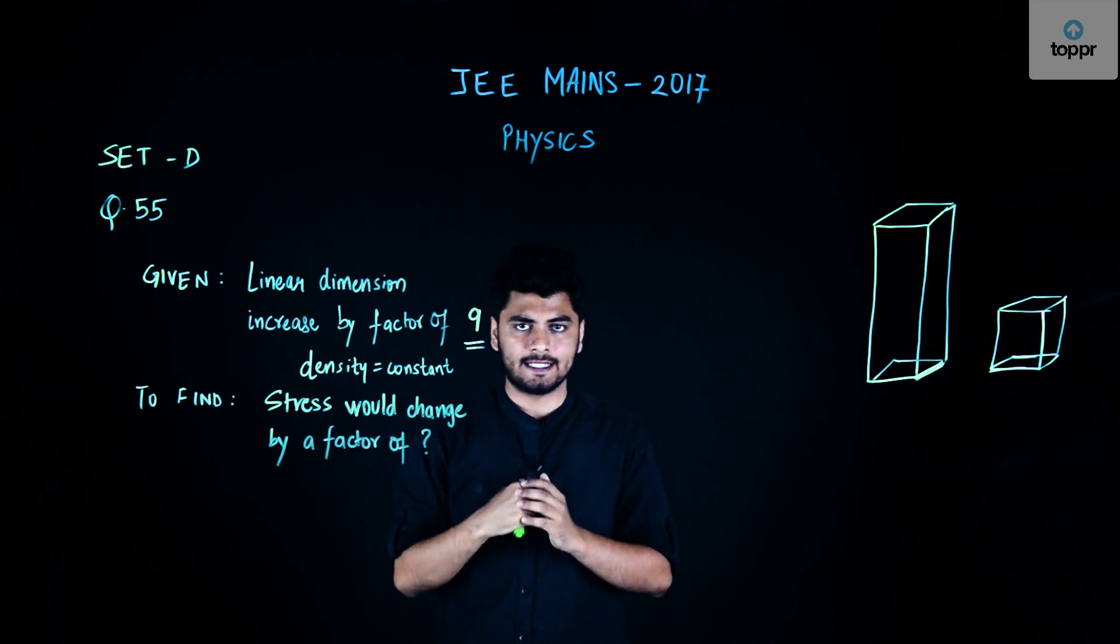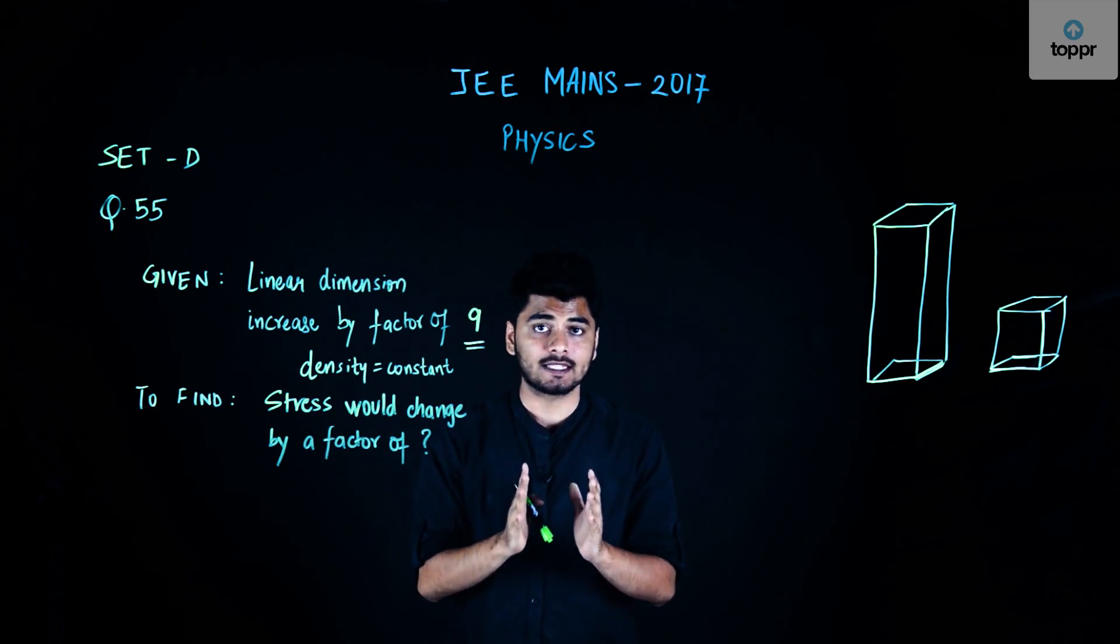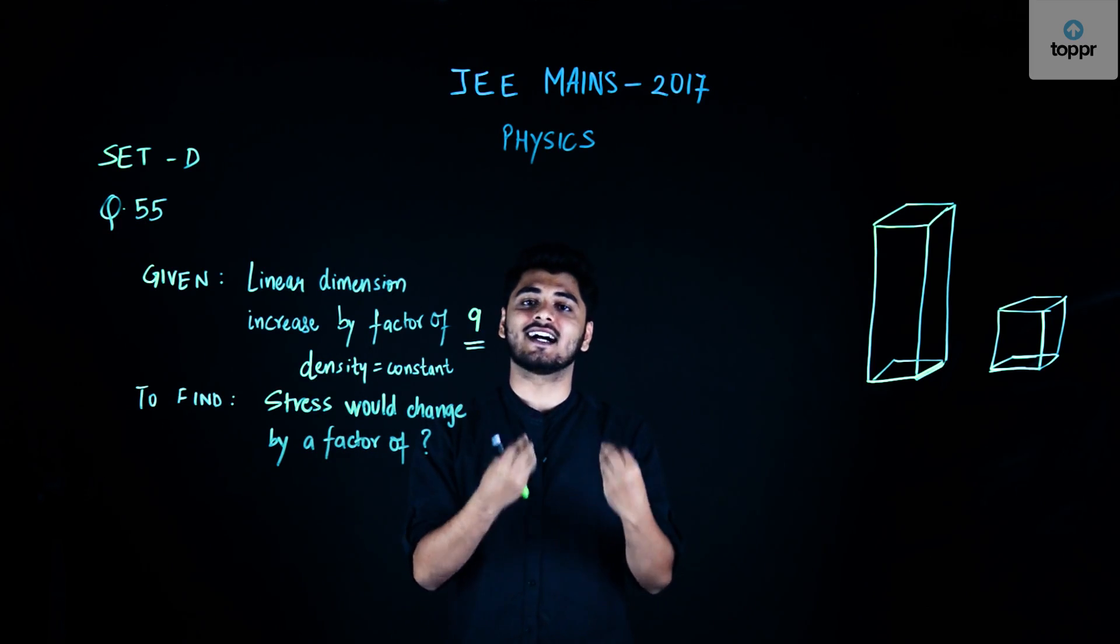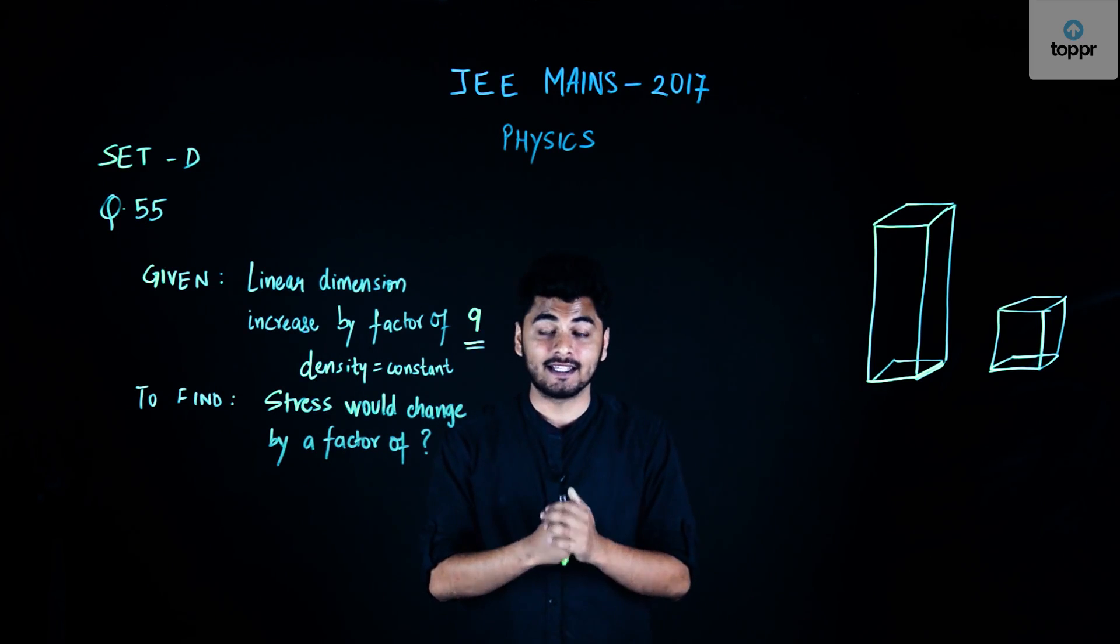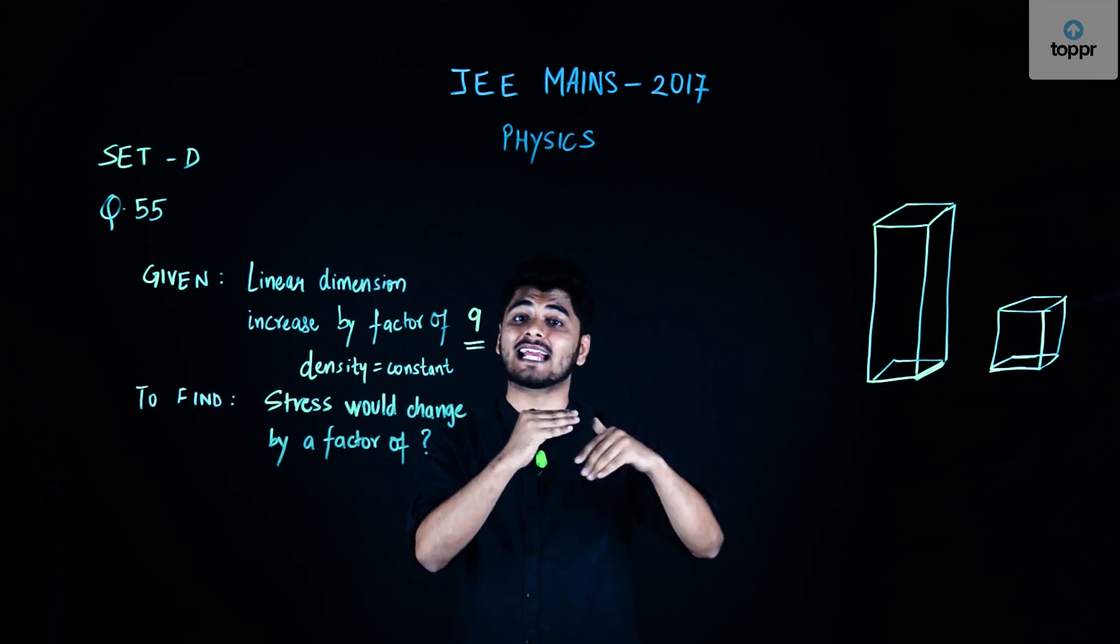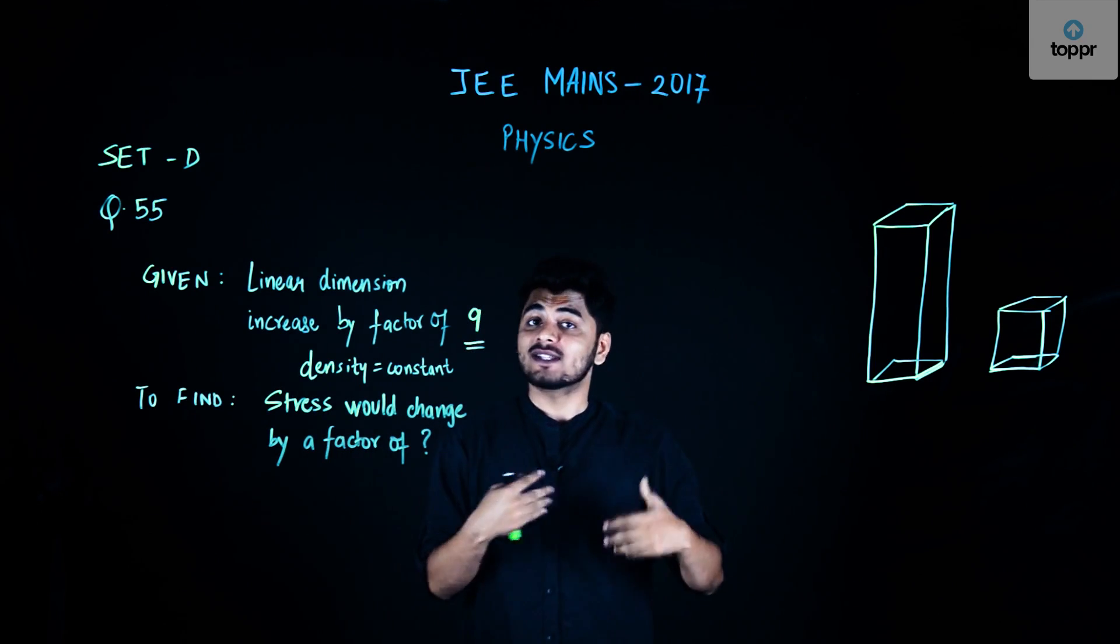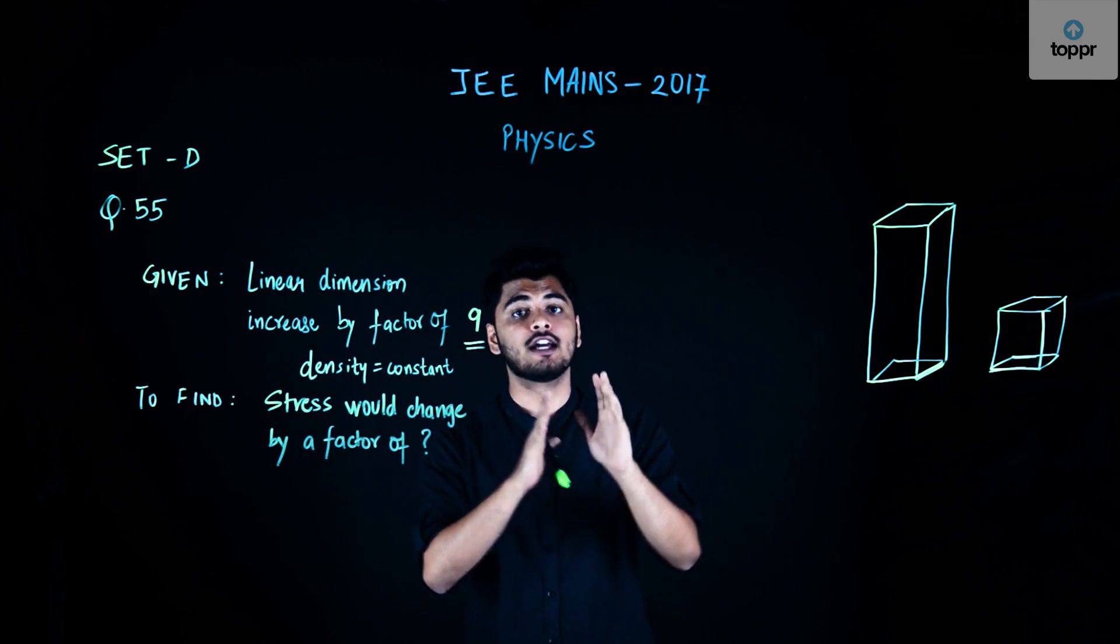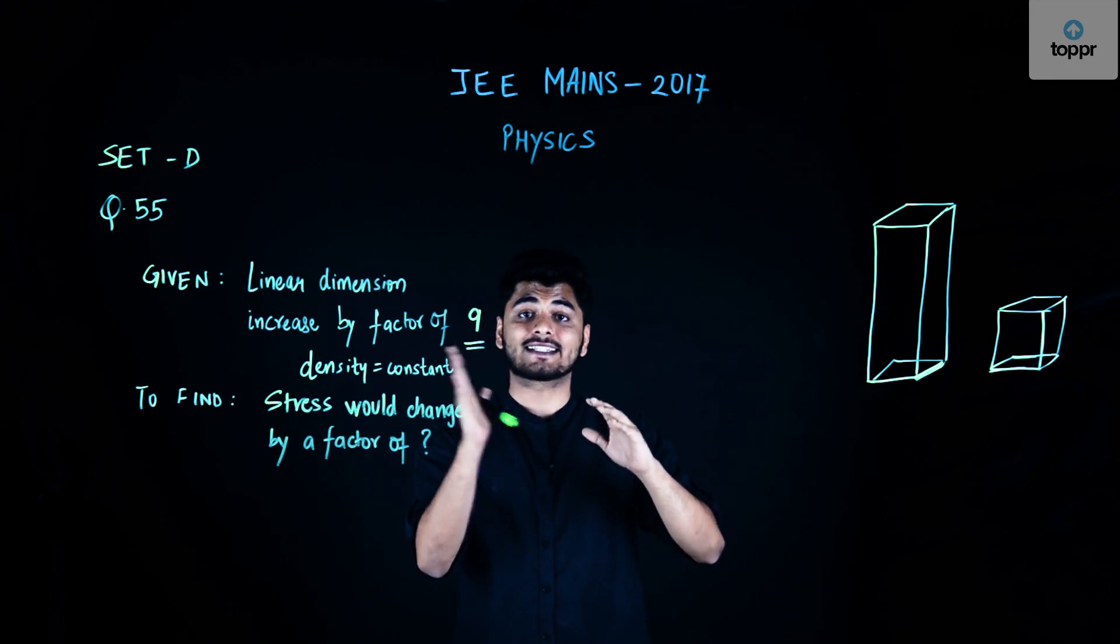In this question, a man grows into a giant overnight such that one of the linear dimensions increases by a factor of 9. If I grow into a giant overnight, only one of my dimensions, a linear dimension, grows by a factor of 9.